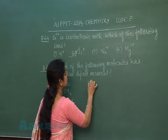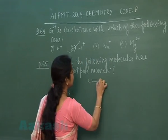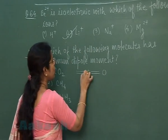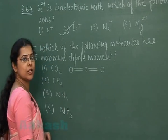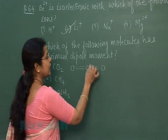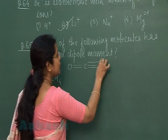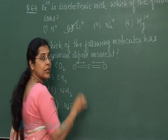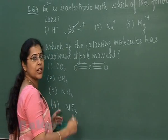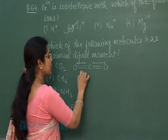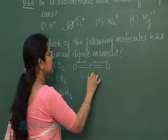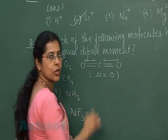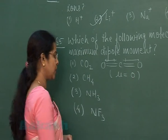The first option is carbon dioxide (CO₂). As we know, CO₂ is a linear molecule. It contains two polar bonds, but the bonds are in opposite directions, so the resultant is zero and this molecule is a non-polar molecule.